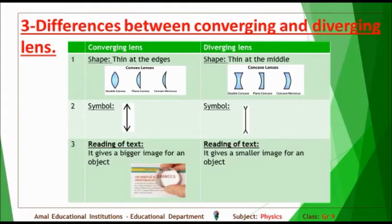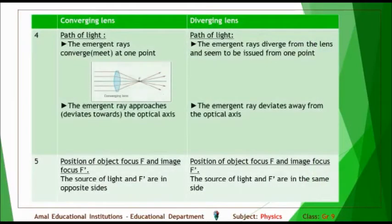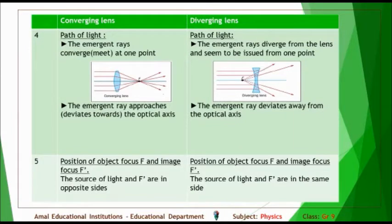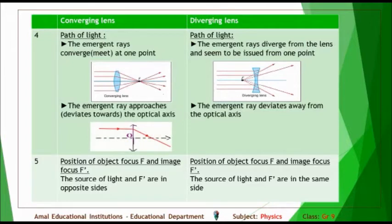The converging lens gives a bigger image for an object, while a diverging lens gives a smaller image for an object. Regarding the path of light: in a converging lens, the emergent rays converge at one point, so the lens converges the rays. In a diverging lens, the emergent rays diverge from the lens and seem to be issued from one point, so the diverging lens diverges the rays. The emergent rays of a converging lens get nearer to the optical axis, while the diverging lens deviates rays away from the optical axis.